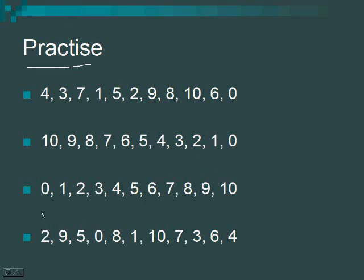Now let's go a little faster: 공, 하나, 둘, 셋, 넷, 다섯, 여섯, 일곱, 여덟, 아홉, 열. Now let's try a little faster in random order: 둘, 아홉, 다섯, 공, 여덟, 하나, 열, 일곱, 여섯, 넷.